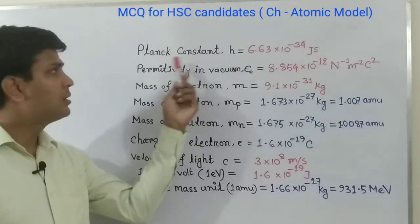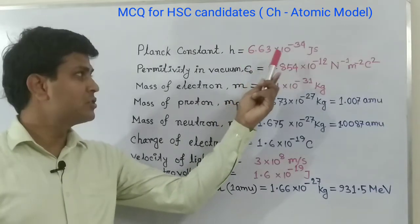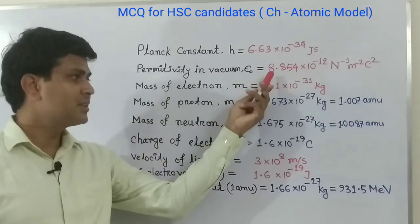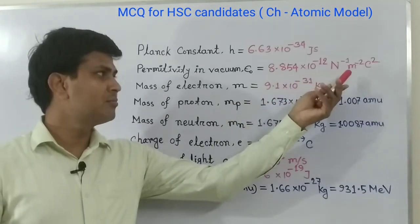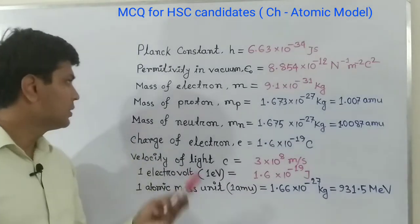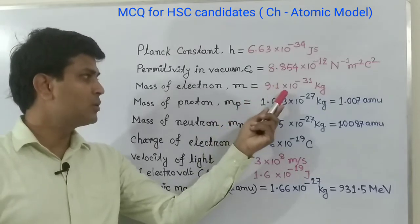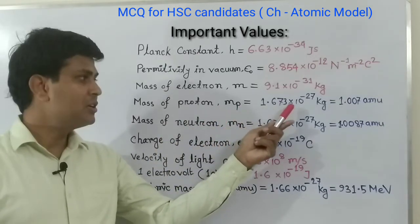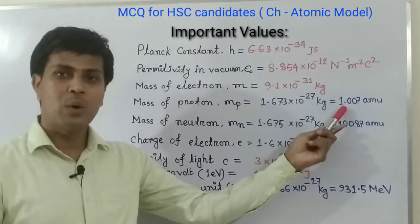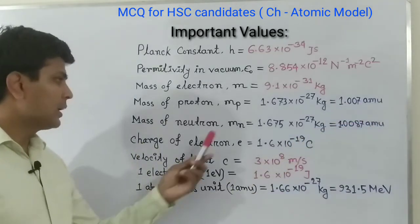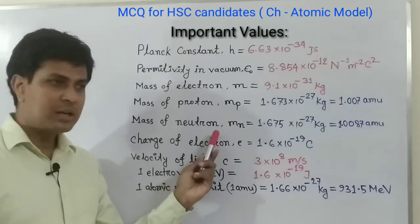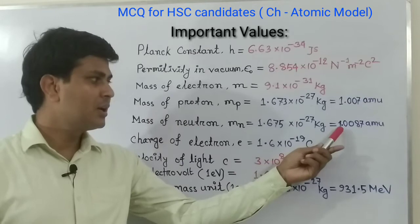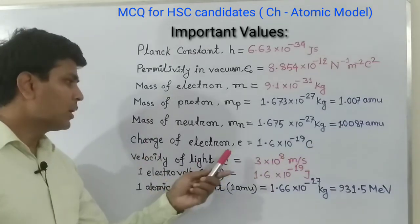Now let's see all the important values for this chapter. Planck's constant h equals to 6.63 into 10 to the power minus 34 joule second. Permittivity in vacuum epsilon naught equals to 8.854 into 10 to the power minus 12 per newton per meter squared per coulomb squared. Mass of the electron m equals to 9.1 into 10 to the power minus 31 kg. Mass of the proton m_p equals to 1.673 into 10 to the power minus 27 kg, or 1.007 atomic mass unit. Mass of the neutron m_n equals to 1.675 into 10 to the power minus 27 kg, with atomic mass unit value 1.0087.